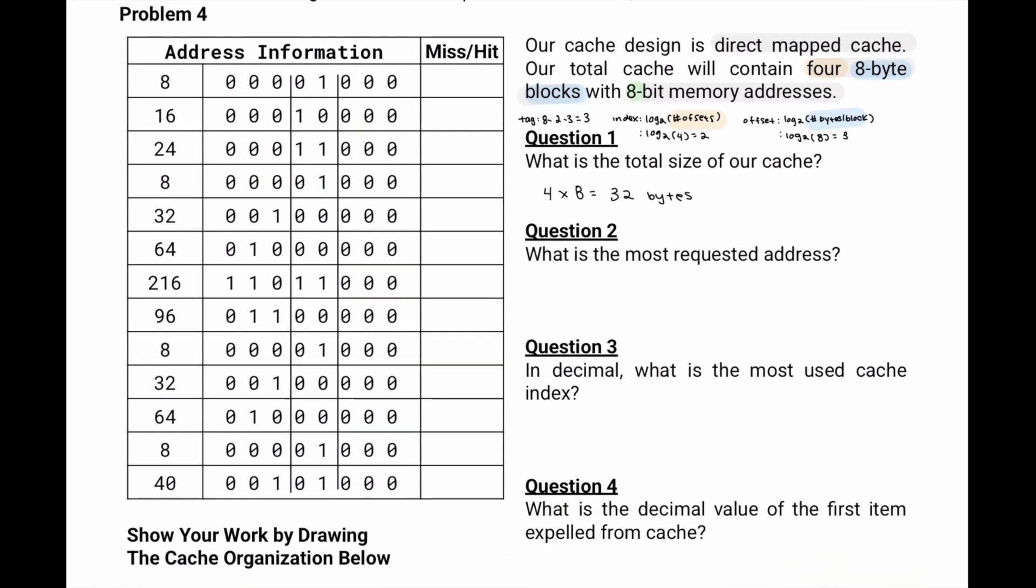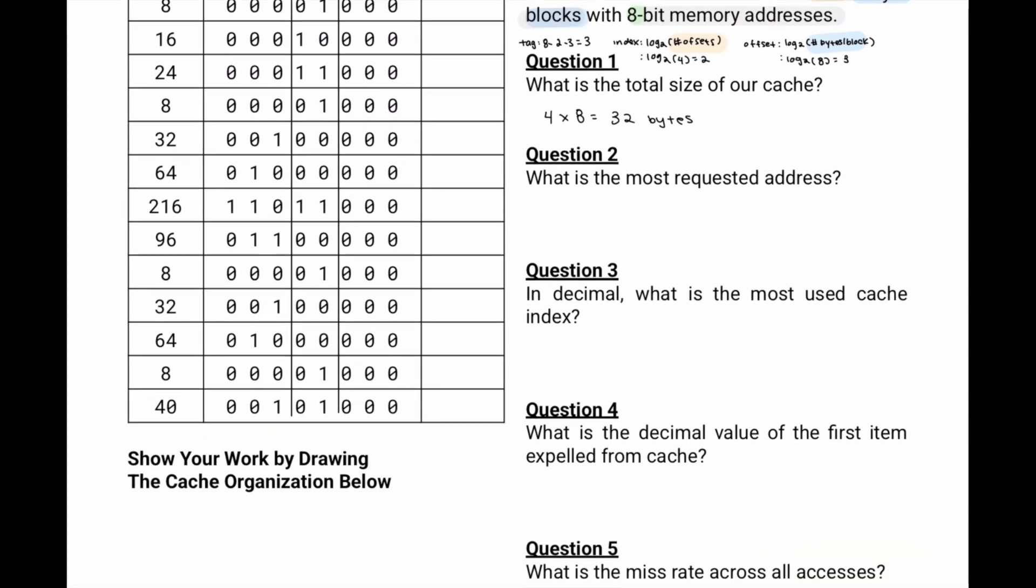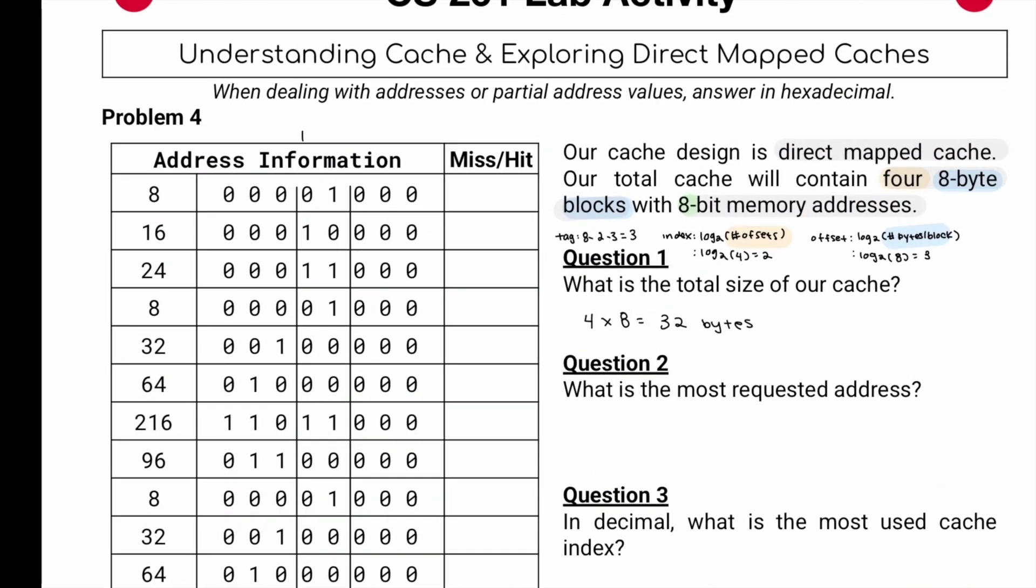We know our index are the next two, and then the tag is the first three. So our index is going to be really important for us when we're actually drawing that cache. I'll highlight them as we go along, but we know this is the index, this is the tag, this is the offset.